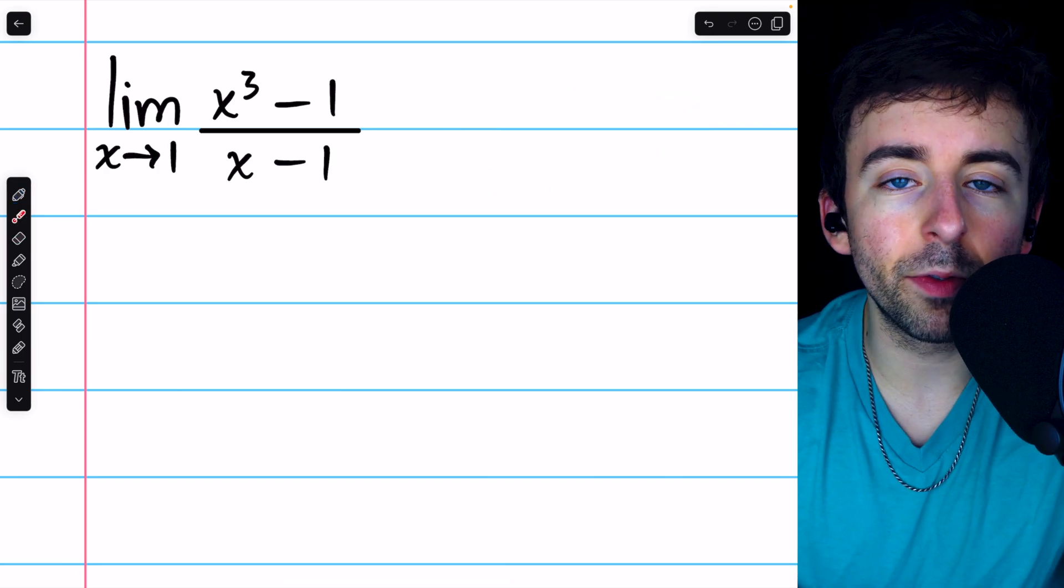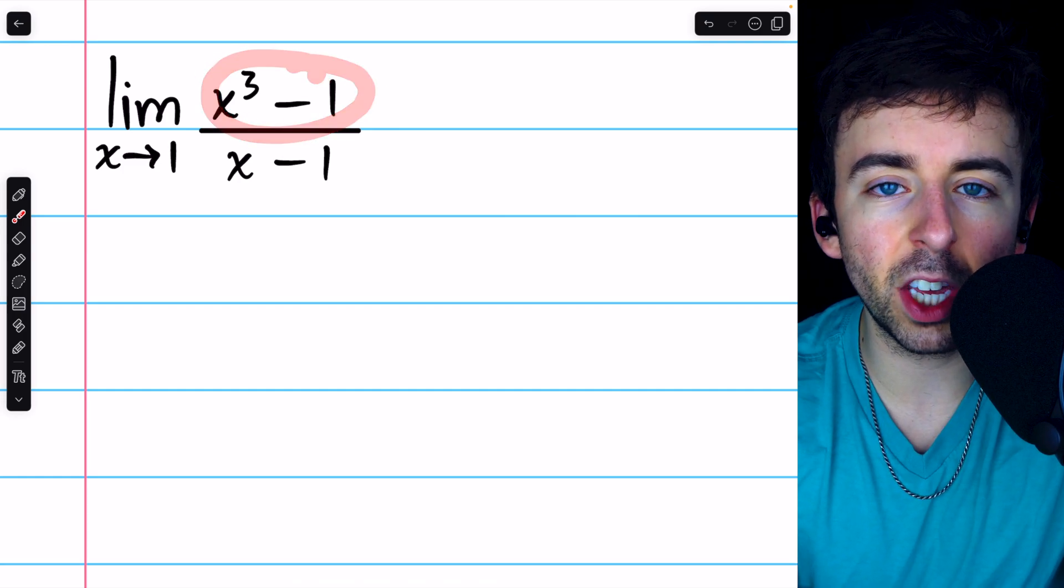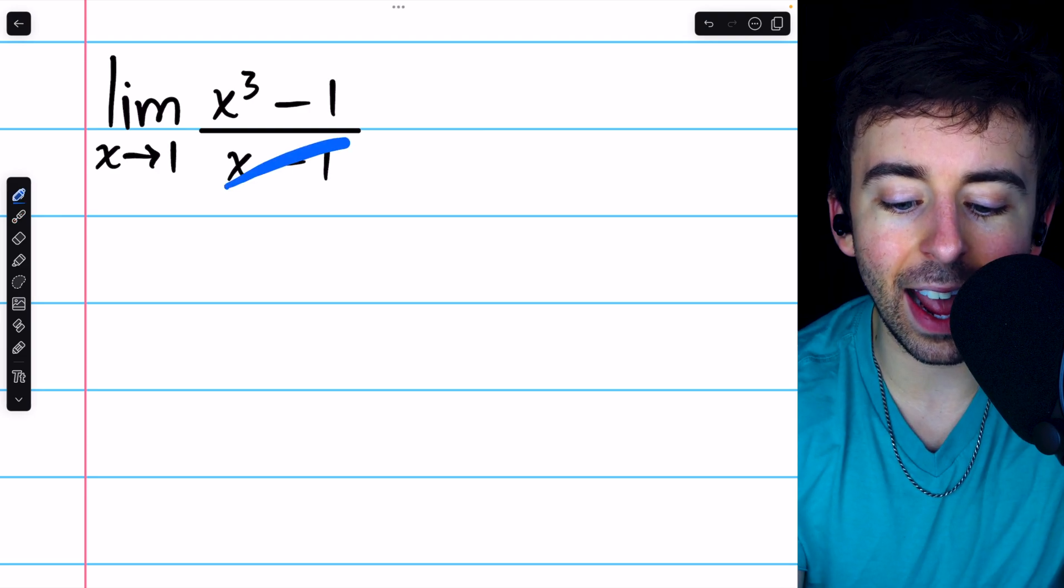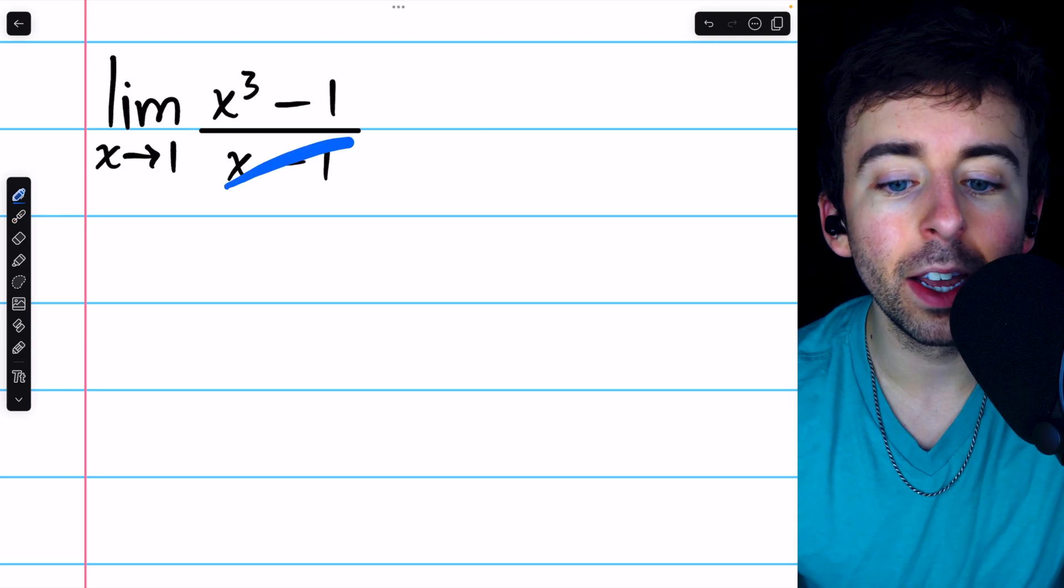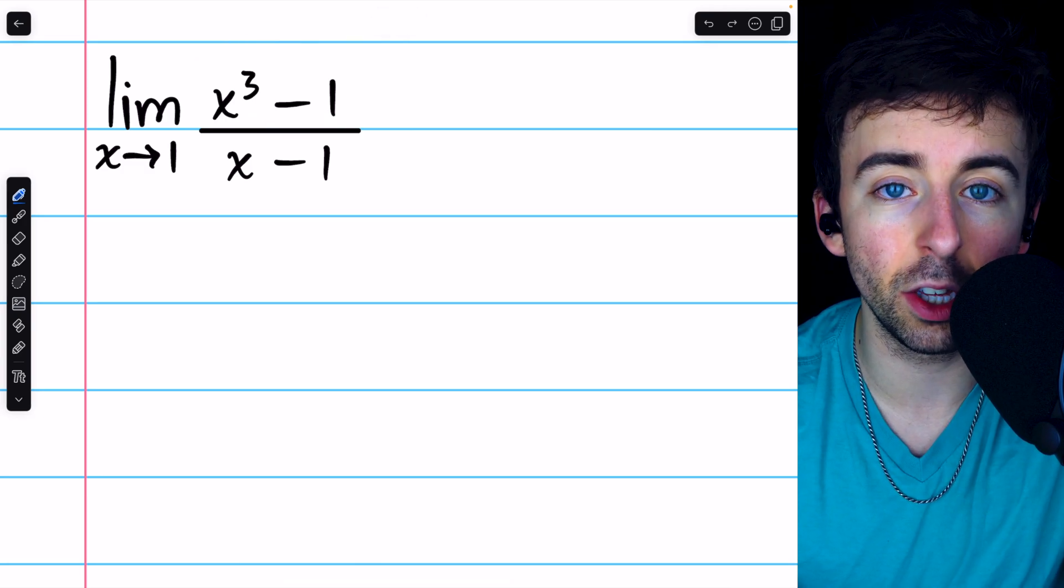If you remember important factorizations of polynomials, you may recall that this, a difference of cubes, can be factored, and thus we might be able to cancel out the denominator. So let's factor the numerator, which again is a difference of cubes.